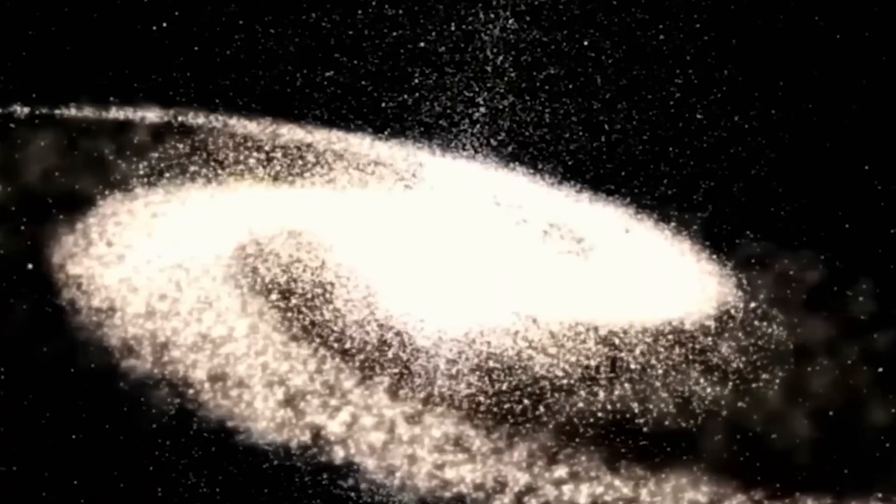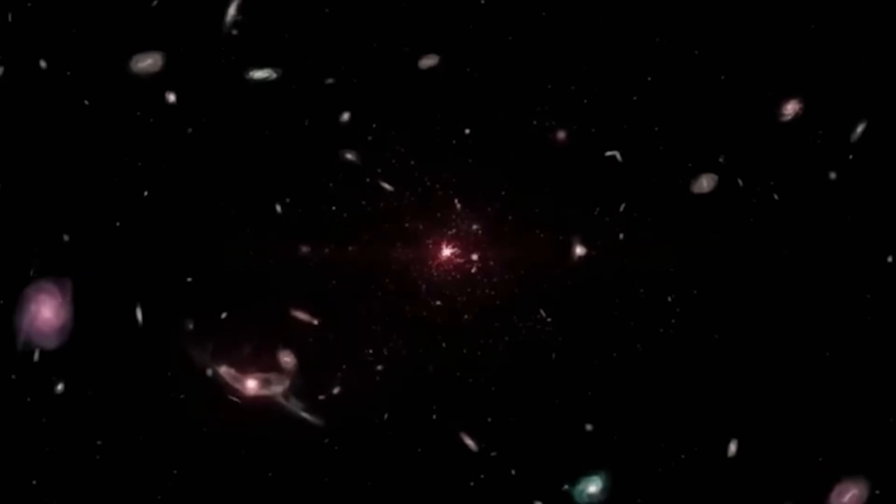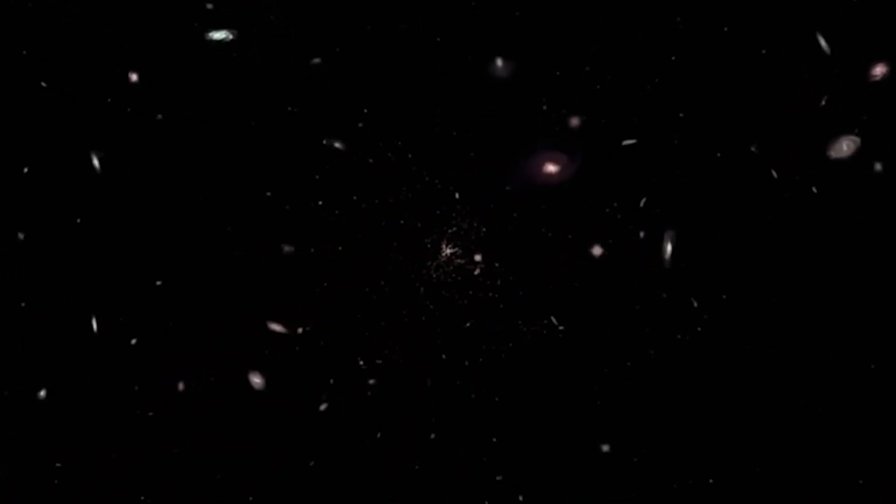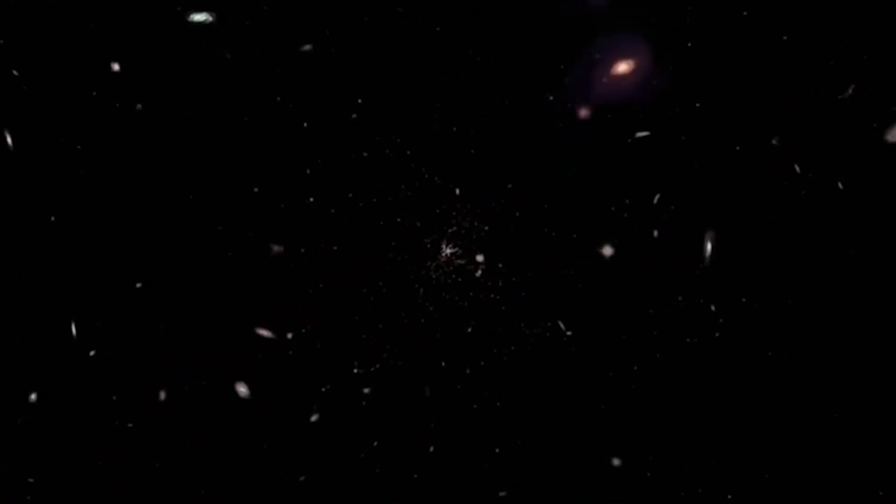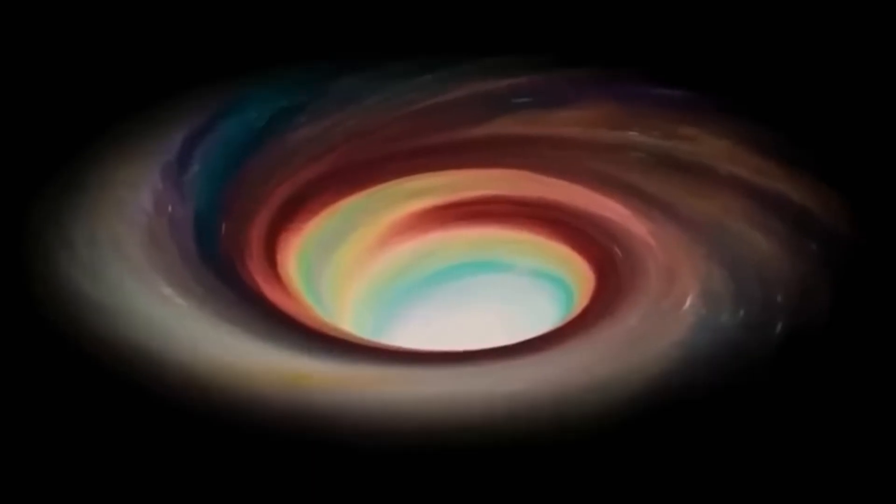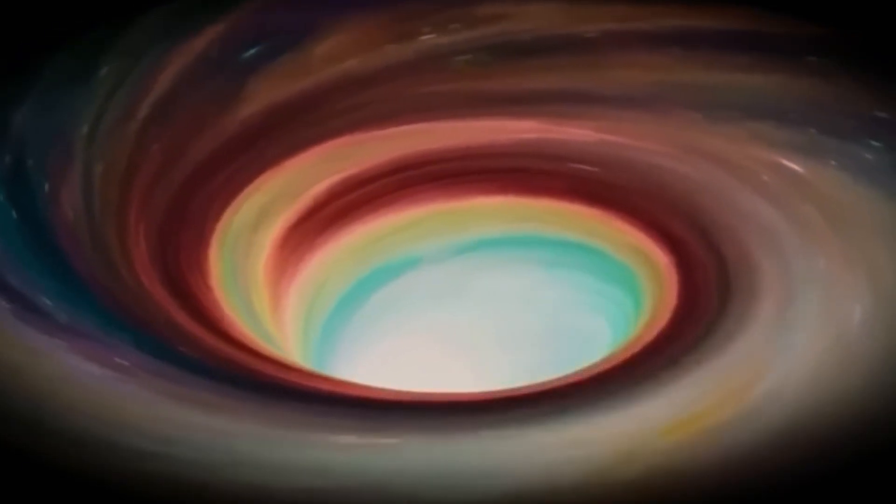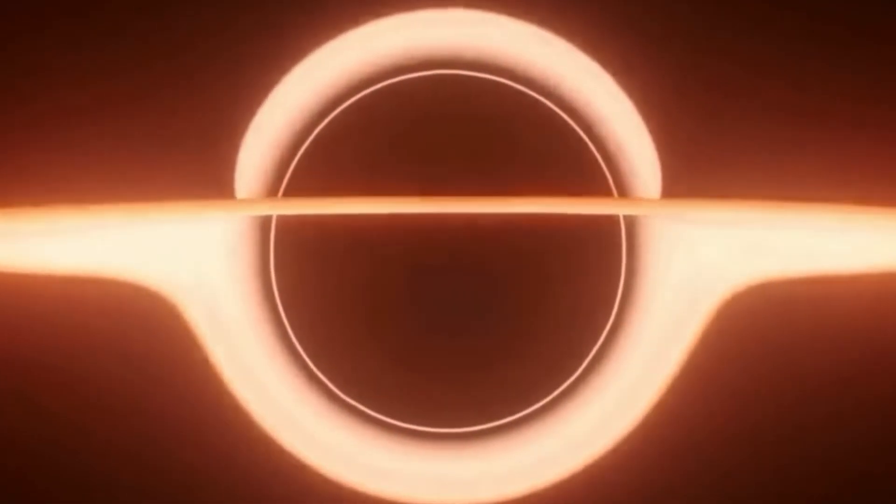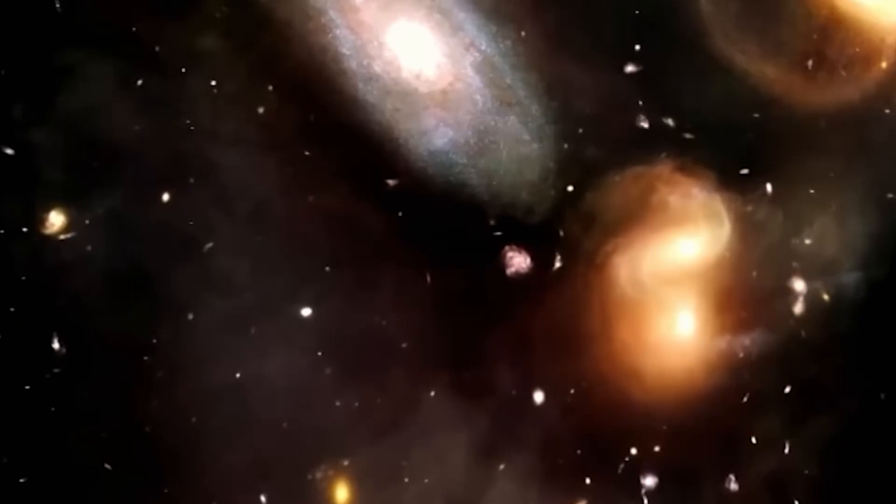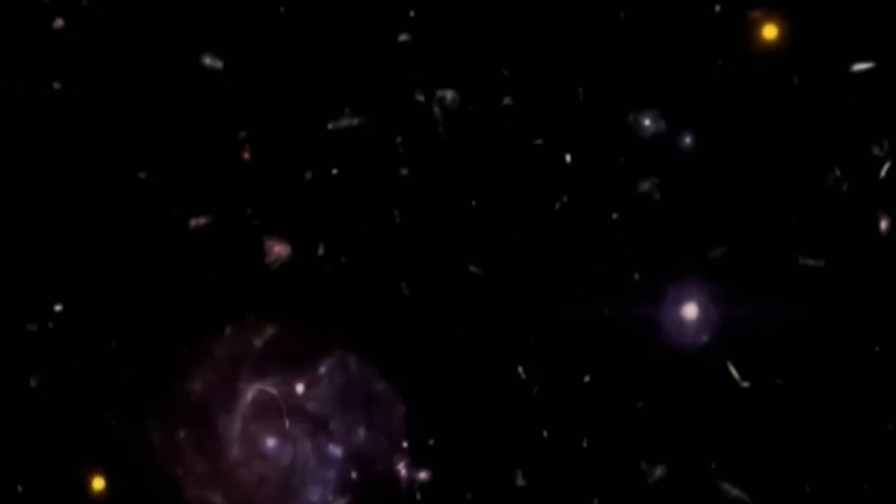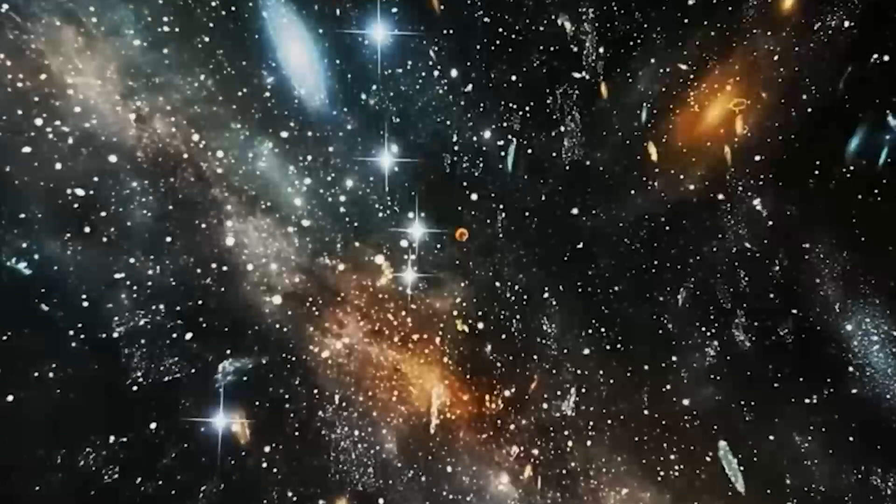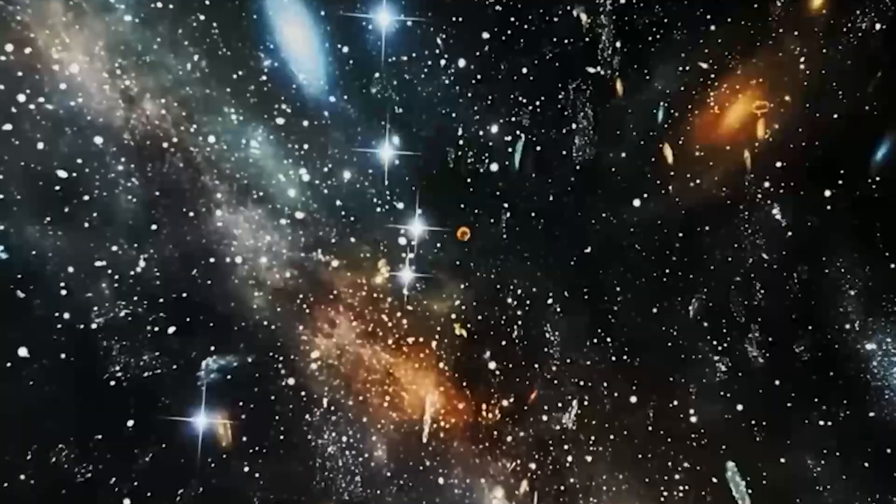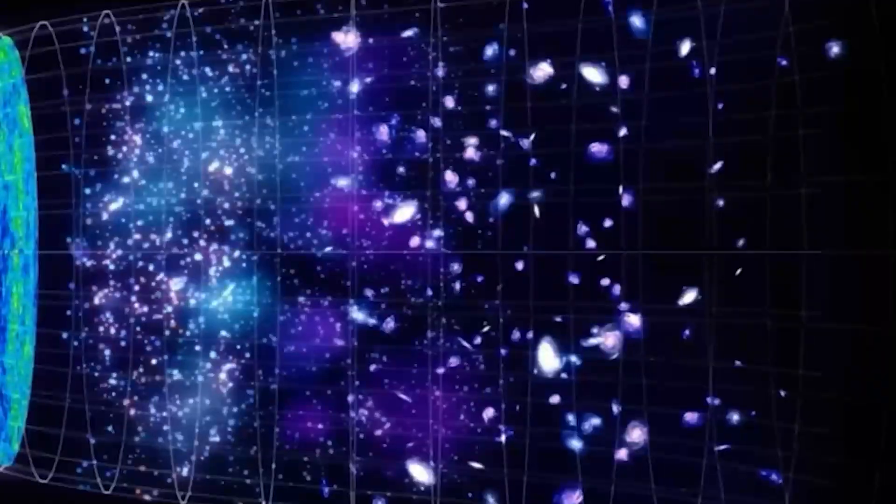That means the boundary of our universe, what we think of as the edge of spacetime, could actually be the surface of a colossal black hole existing in a larger reality we cannot yet see. It's a theory that blurs the line between cosmology and philosophy, between science and something deeper. If that's true, every galaxy, every star, every planet, and every one of us exists within a cosmic sphere of curved spacetime, the glowing interior of an event horizon, whose exterior may be another universe entirely.